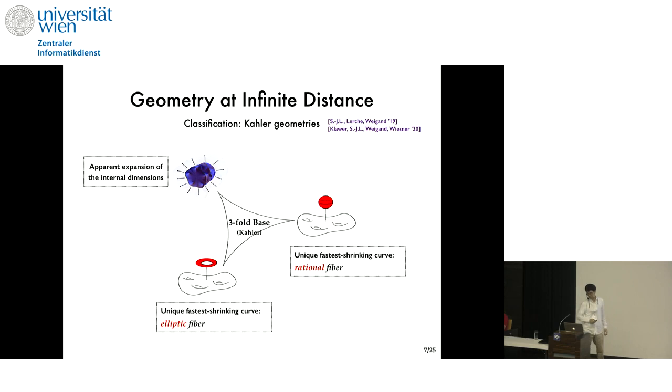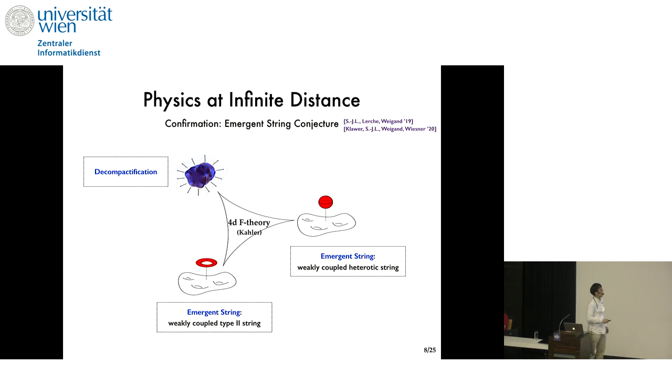As I said, the limits involving a relative scaling should also involve some shrinking curves in the geometry. In some limits, there is actually a unique, non-rigid curve that shrinks at the fastest parametric rate. It turns out that this can be either rational or an elliptic fiber of the internal space B3. In all other limits, we realize that part where all of the internal dimensions should expand. So that's the geometry. As for the physics, in the first two classes, we have a tensionless heterotic or type 2 string emerging, and in the last class, the EFT just decompactifies. And this way, we can confirm the emergent string conjecture for every infinite distance limit of Keller moduli space for four-dimensional F-theory.